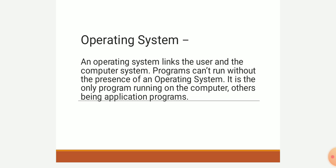We can say that an operating system is a software, or system software, that provides an interface between computer hardware and the user. This is the basic definition of an operating system. An operating system links the user and the computer system — programs cannot run without the presence of an operating system.